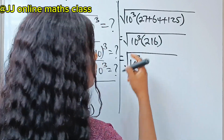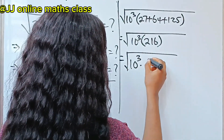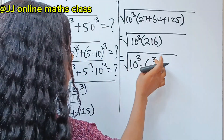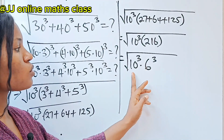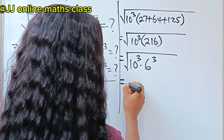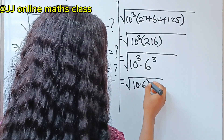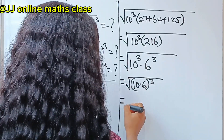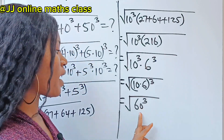Now 216 is 6 to the power of 3. So we have square root of 10 to the power of 3 multiplied by 6 to the power of 3. When we have the same power, we can bring them into a single bracket and bring the 3 outside, so we will have 10 multiplied by 6, raised to the power of 3. This is equal to square root of 60 raised to the power of 3.